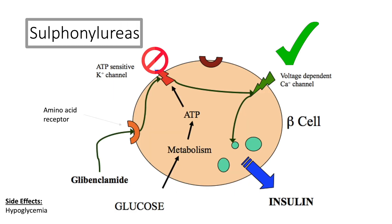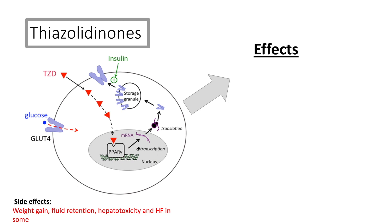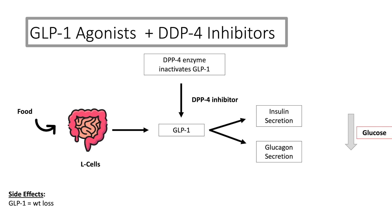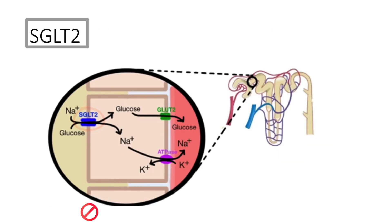Sulfonylureas block the ATP-sensitive potassium channel, leading to greater insulin being released. Side effects include hypoglycaemia. Thiazolidinediones bind to the PPAR-gamma nuclear receptor, which modulates the transcription of several genes, ultimately leading to a more favourable glycaemic and lipid profile. Side effects include weight gain, fluid retention, hepatotoxicity, and heart failure in some. GLP-1 is a hormone released by L-cells in the gut due to the presence of food, and it increases insulin secretion and inhibits glucagon secretion, reducing blood glucose levels. DPP-4 is an enzyme that breaks down GLP-1, so DPP-4 inhibitors promote the length of time GLP-1 can have its effects. The main side effect of GLP-1 agonists is weight loss. Finally, SGLT-2 inhibitors inhibit the reabsorption of glucose through the proximal convoluted tubule, resulting in greater glucose being excreted through the urine.